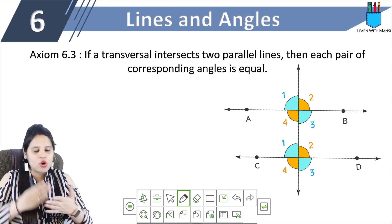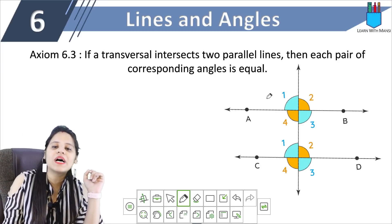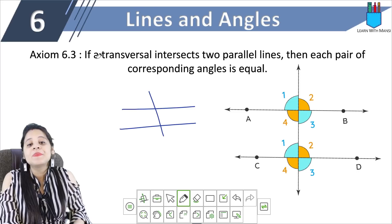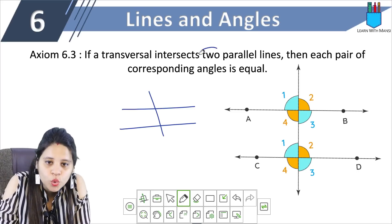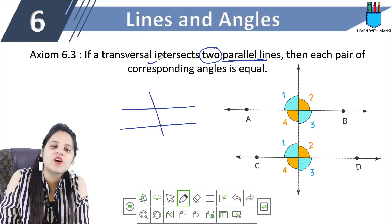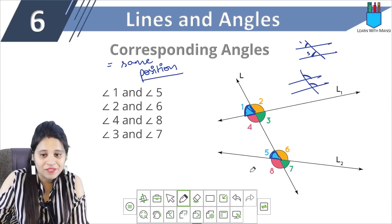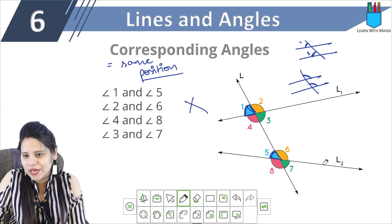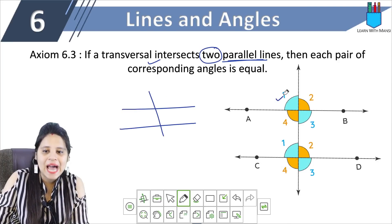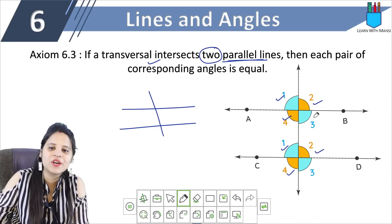Corresponding angles, alternate interior angles — all of these are valid only when the two lines cut by the transversal are parallel lines. So here, if a transversal intersects two parallel lines — this is important, parallel lines — then each pair of corresponding angles is equal. For example, angle 1 equals angle 5. But if the two lines are not parallel, these angle pairs will not be equal. If the lines are parallel, then corresponding angles are equal.